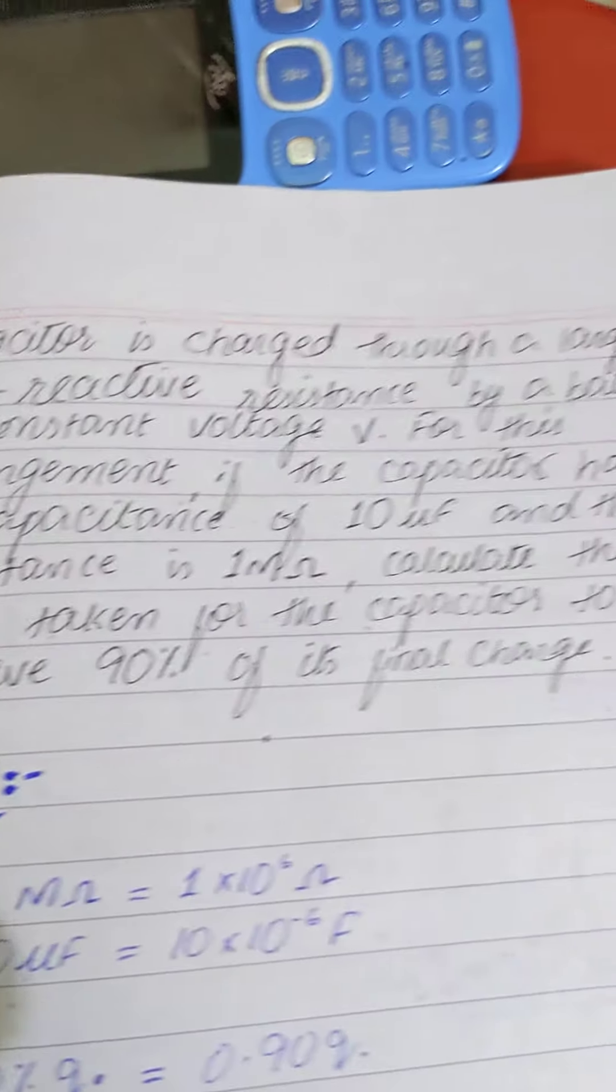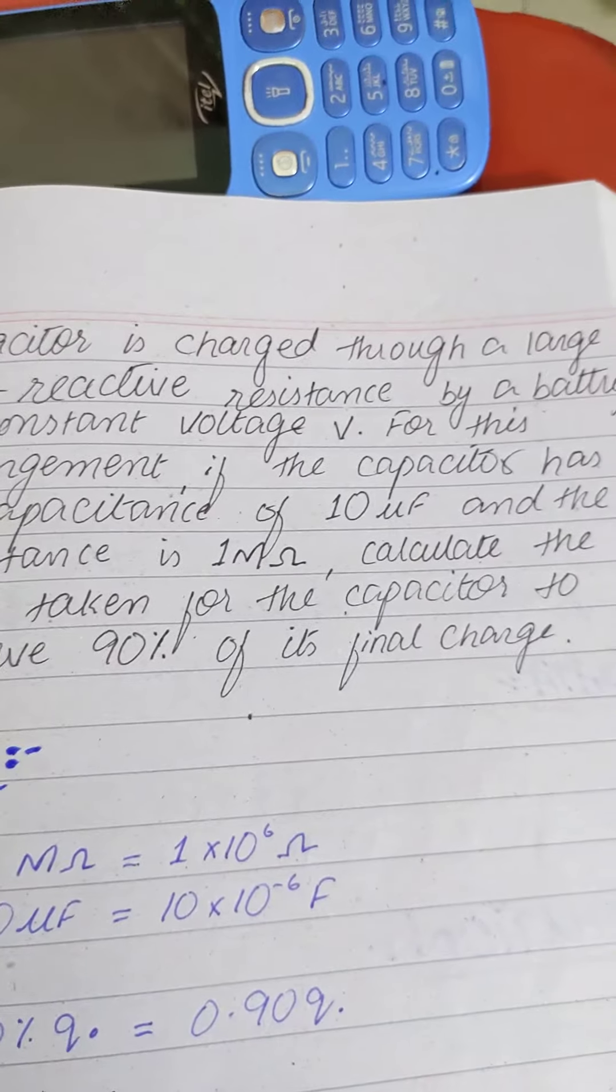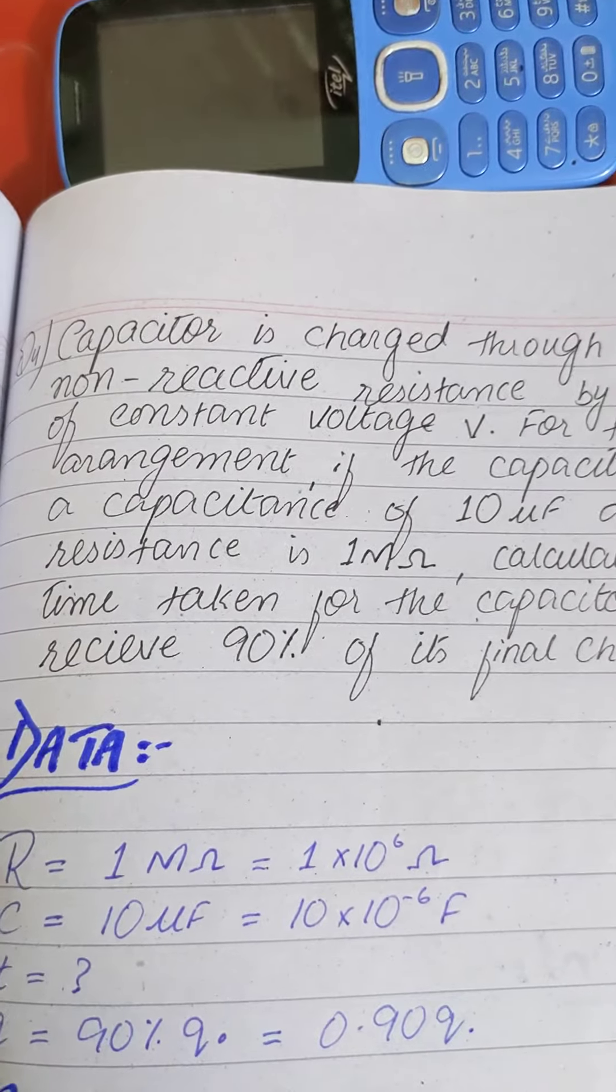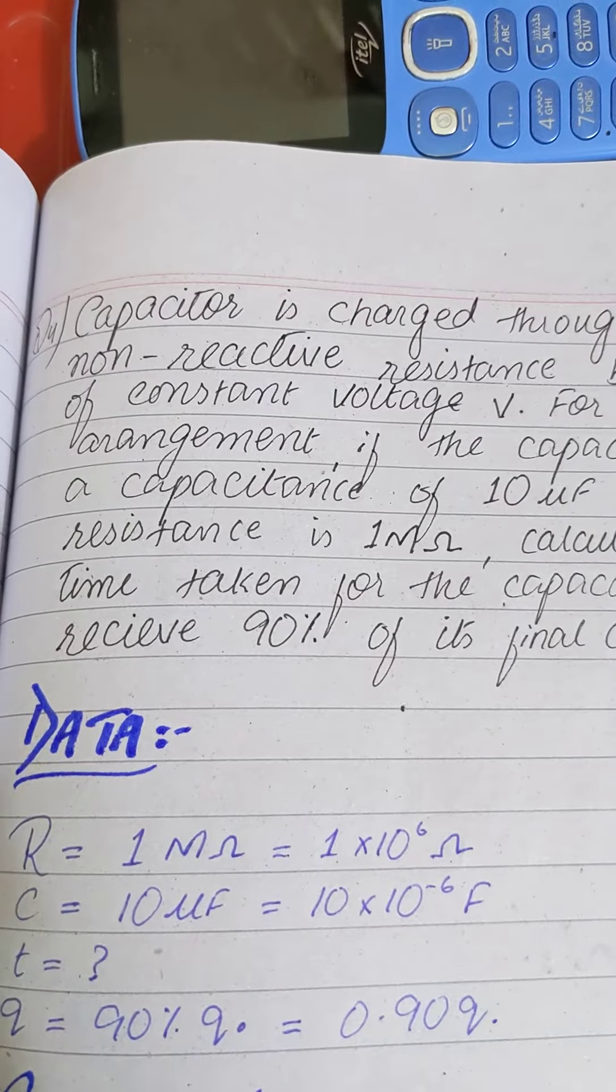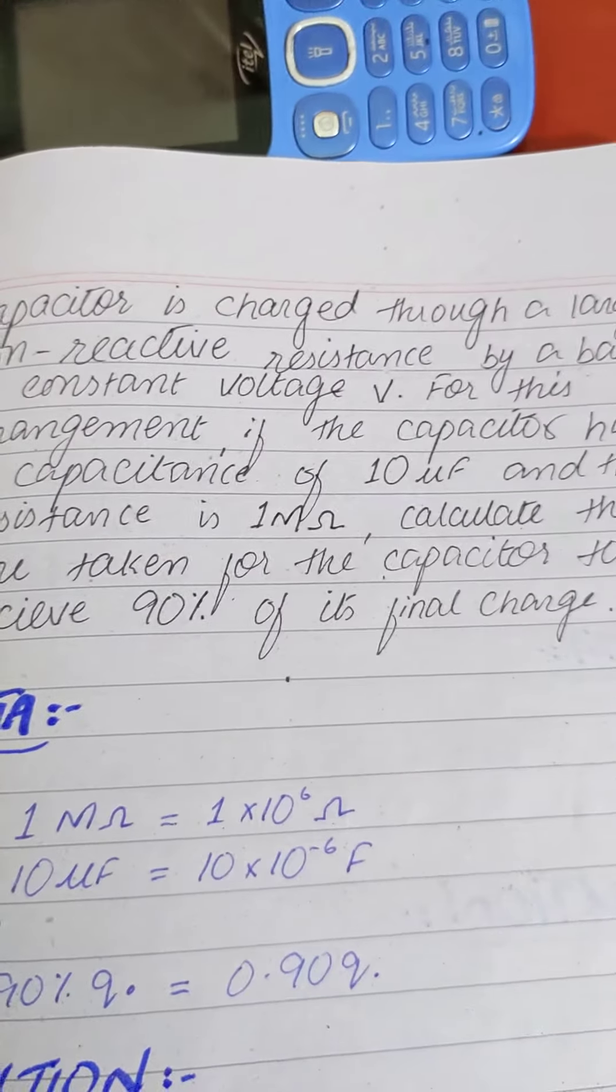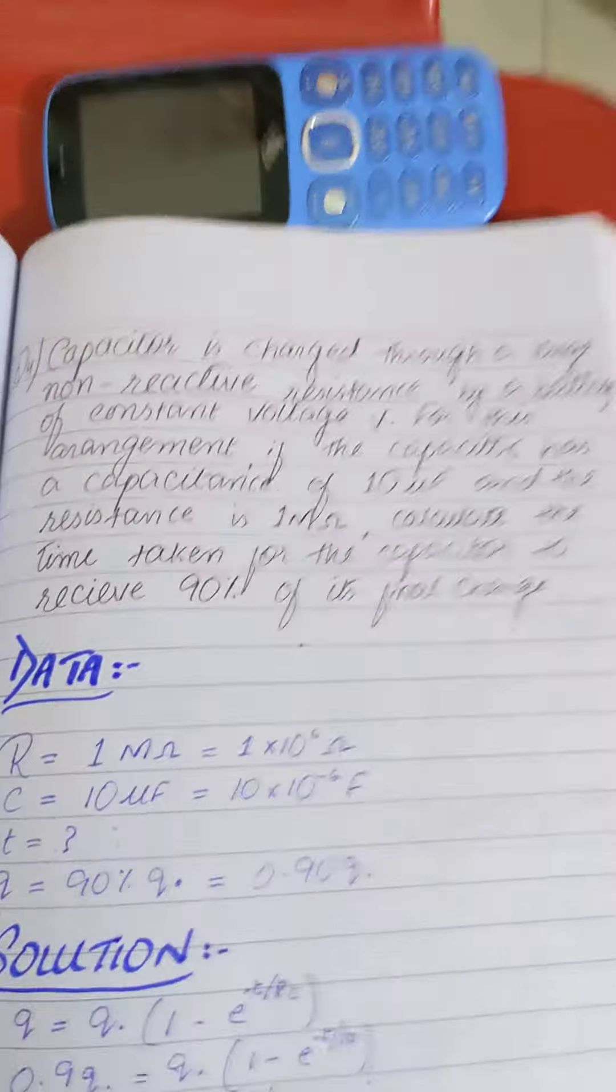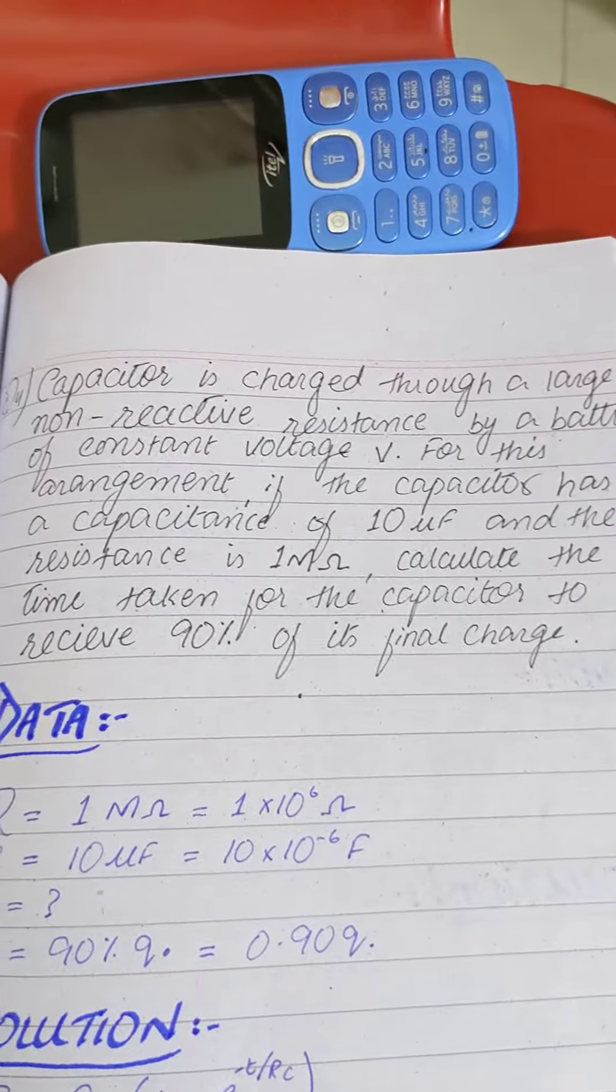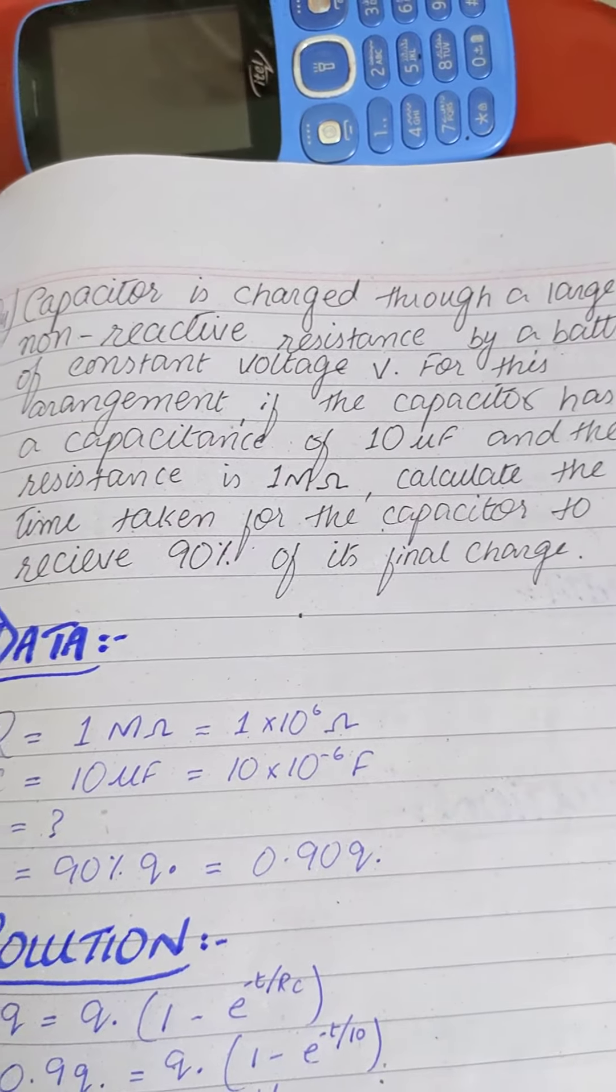Number 9, capacitor question. A capacitor is charged through a large non-reactive resistance by a battery of constant voltage V. For this arrangement, if the capacitor has a capacitance of 10 microfarad and the resistance is 1 megaohm, calculate the time taken for the capacitor to receive 90% of its final charge.